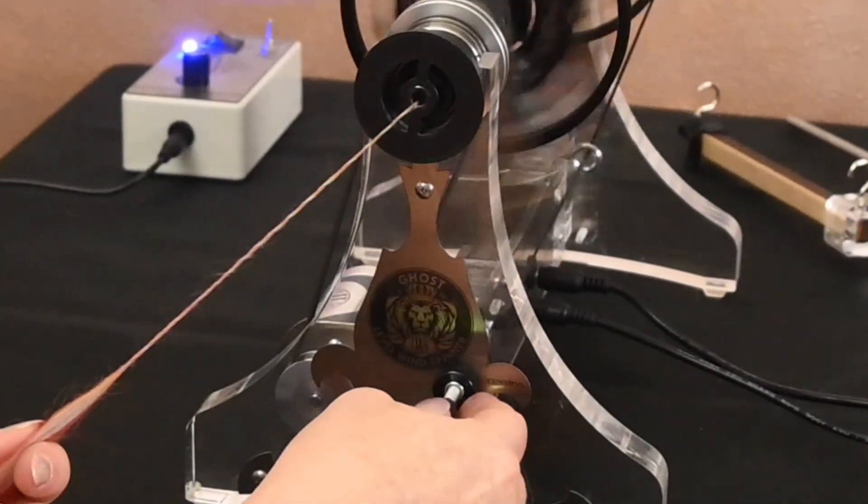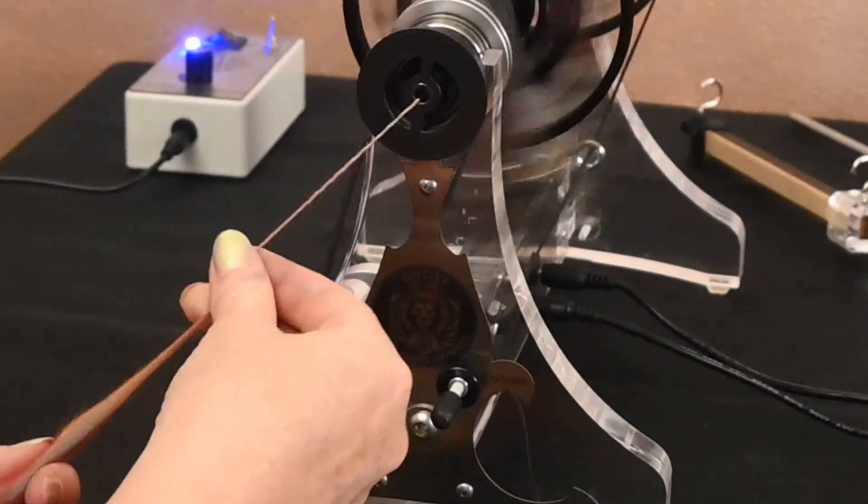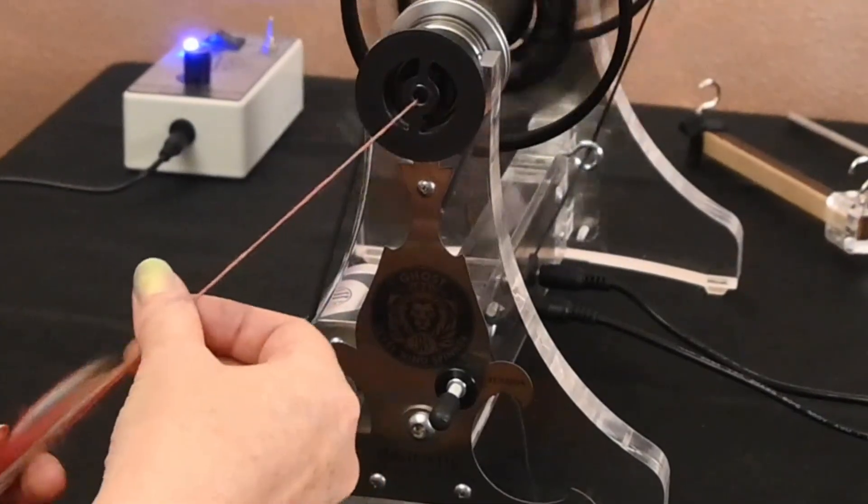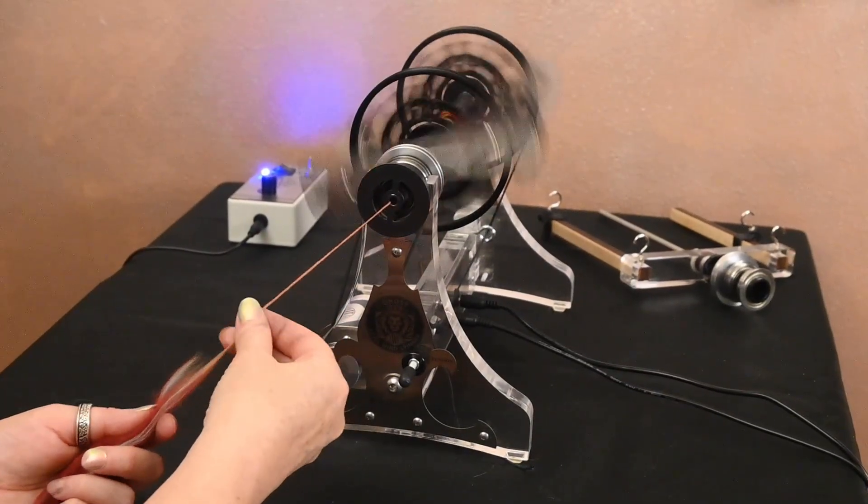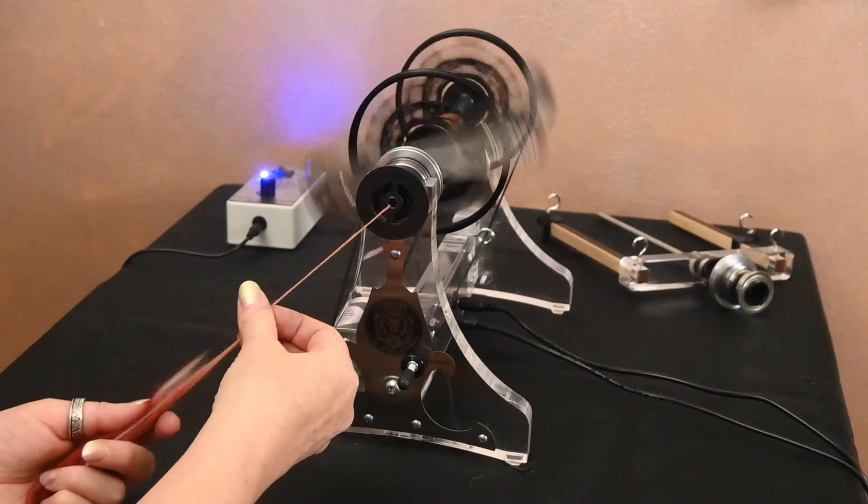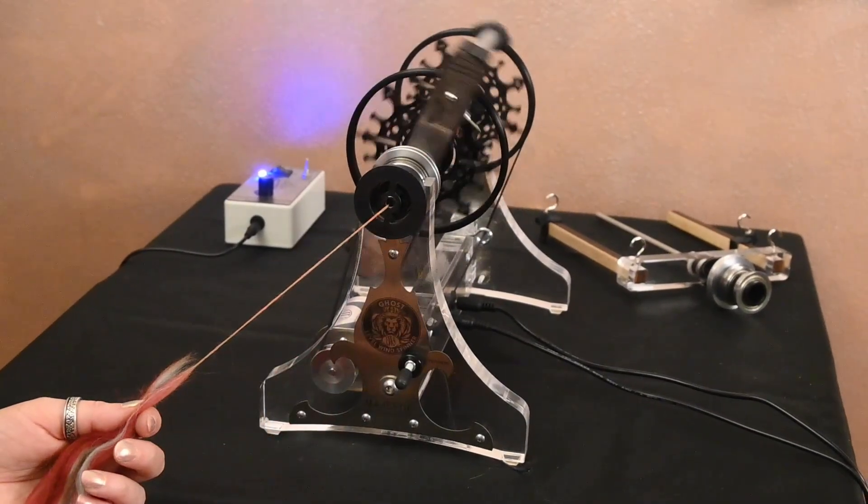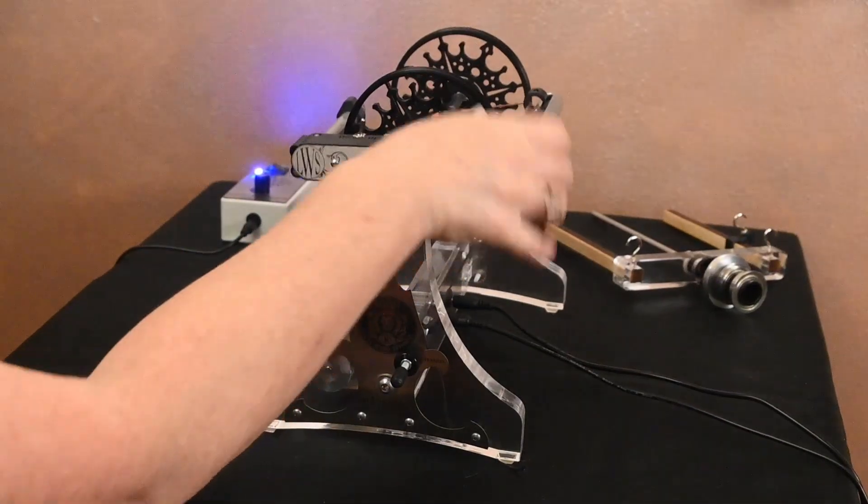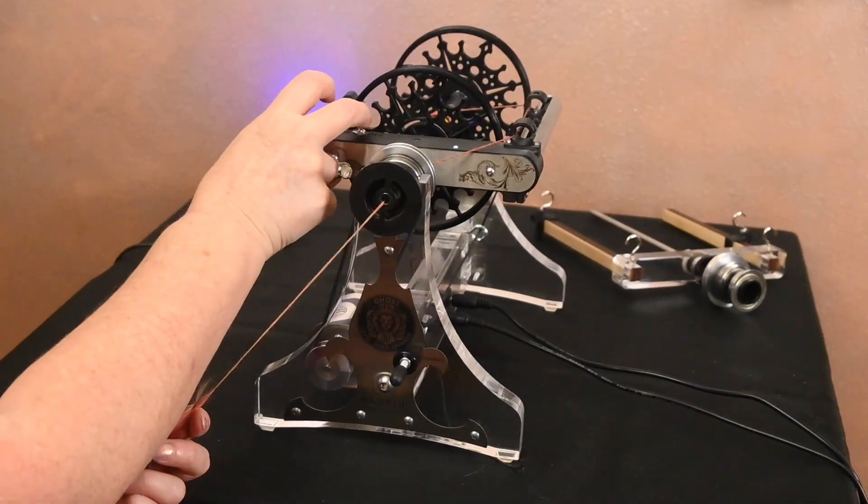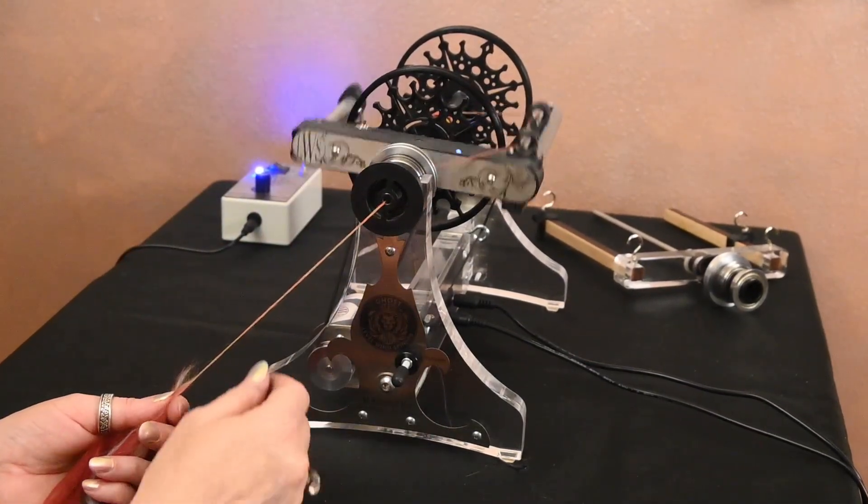To increase or reduce tension I simply need to move that knob right there. Once I have a feel for it and I have a little bit of a leader built on, I'm going to go ahead and turn the auto winder on and then continue spinning.